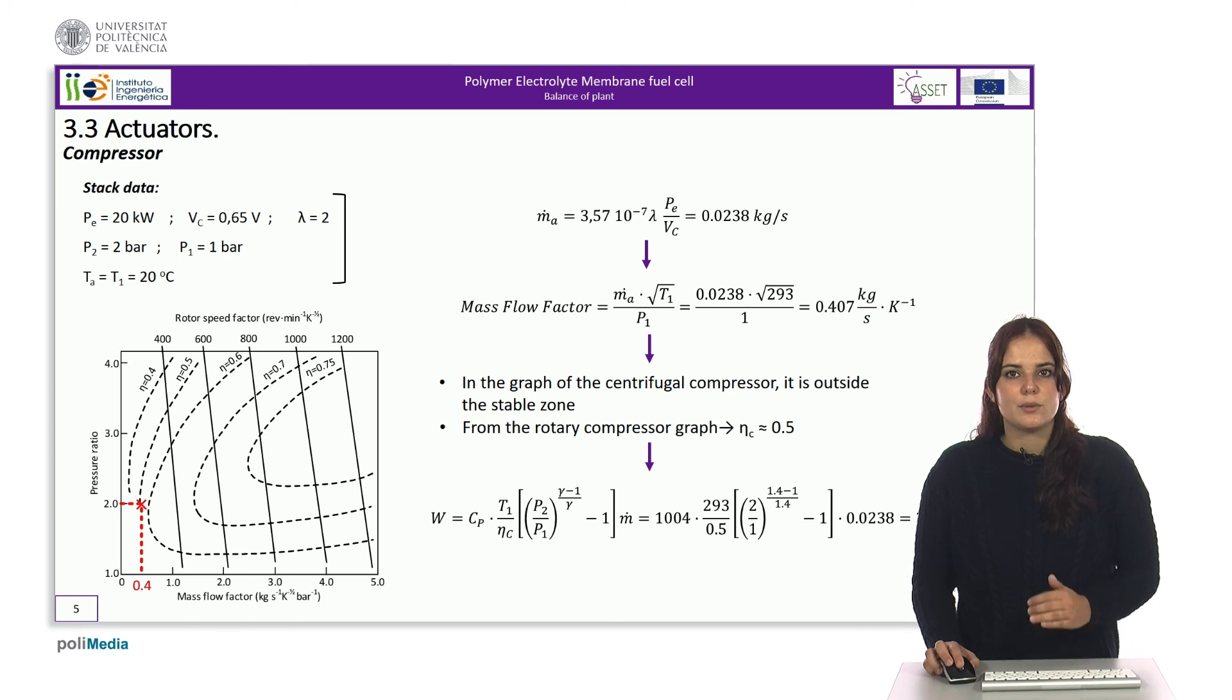Therefore, a Leeson compressor will have to be used. In this case, the operating point is located on the performance curve 0.5.